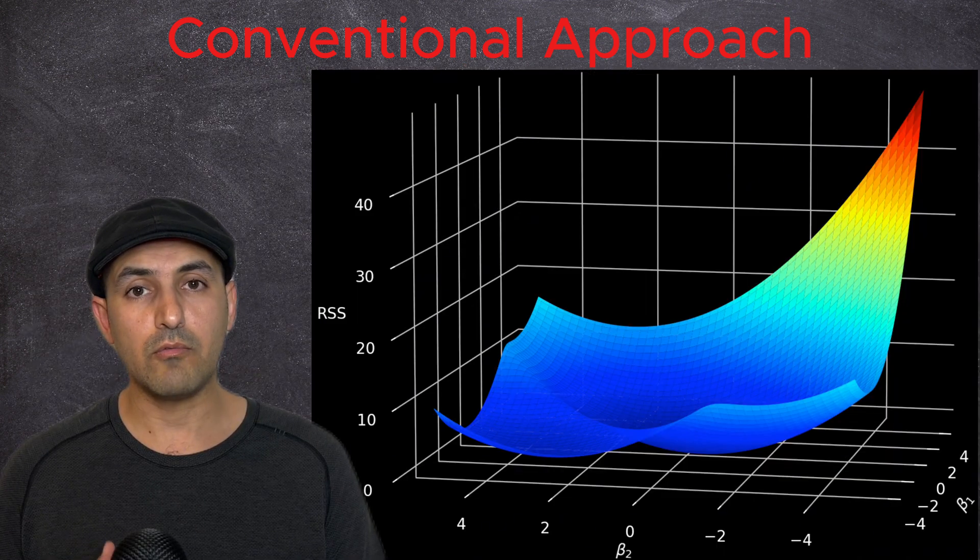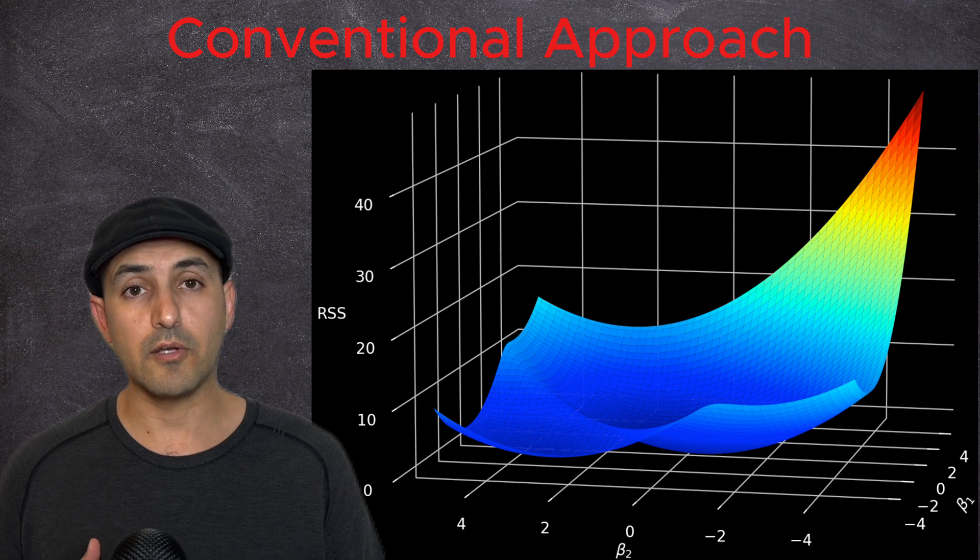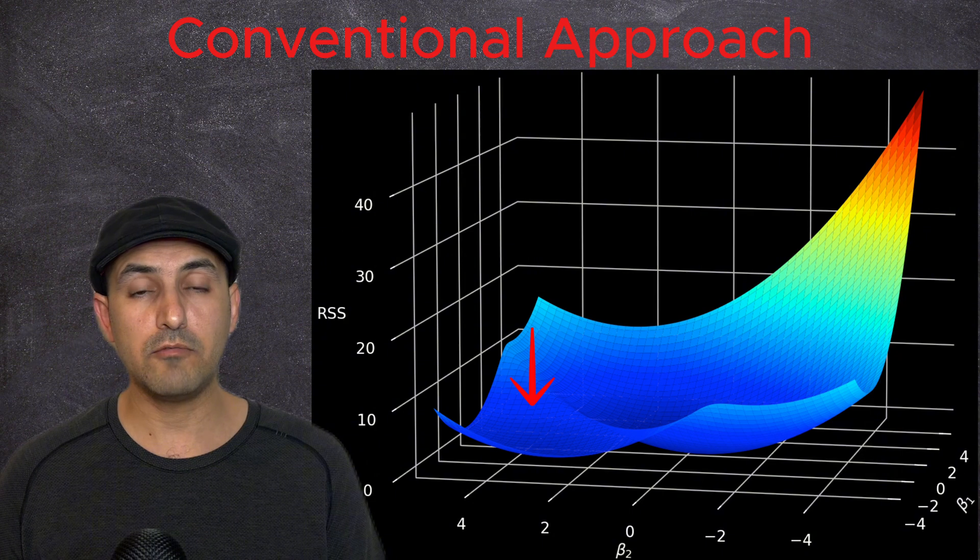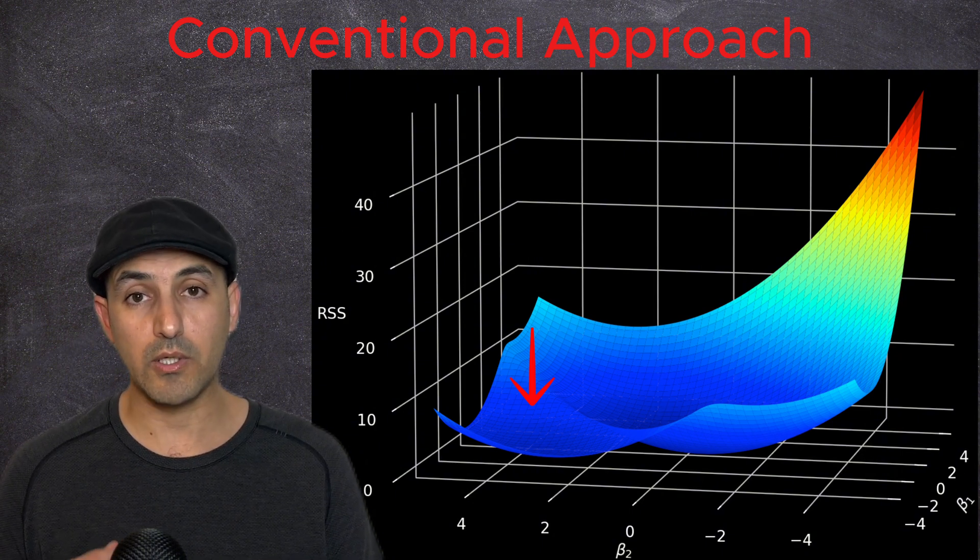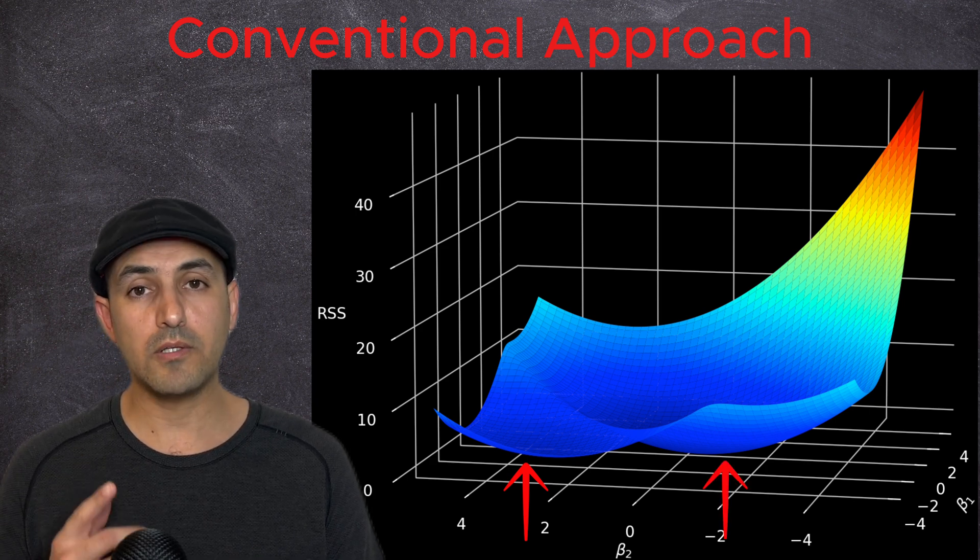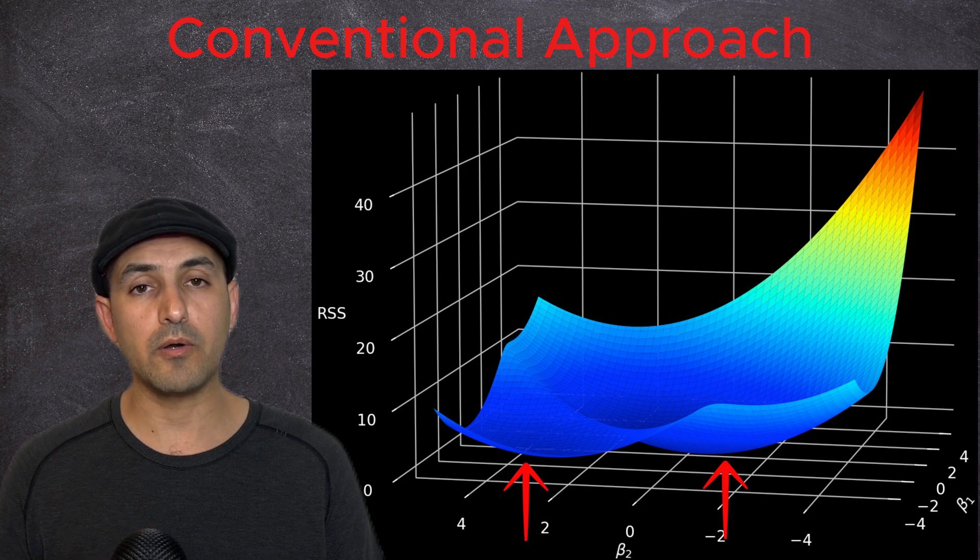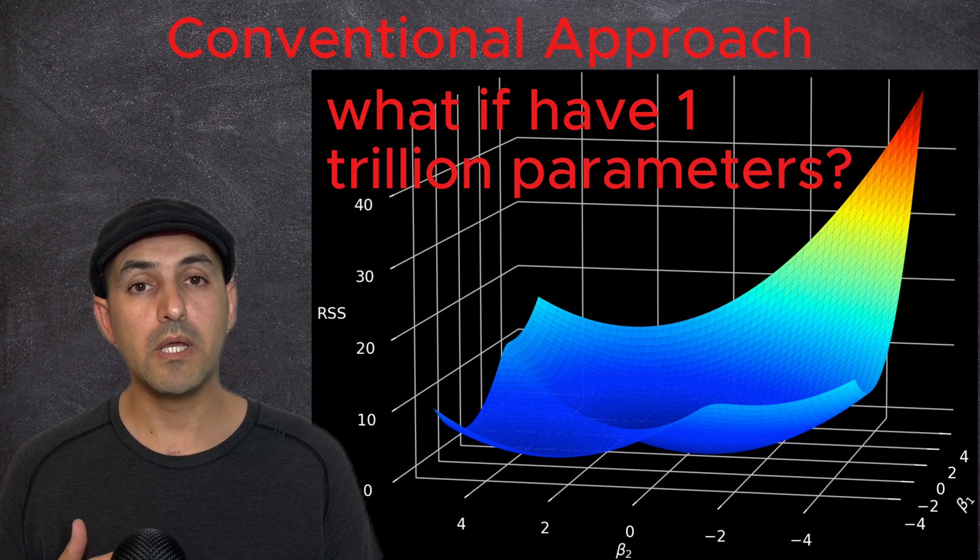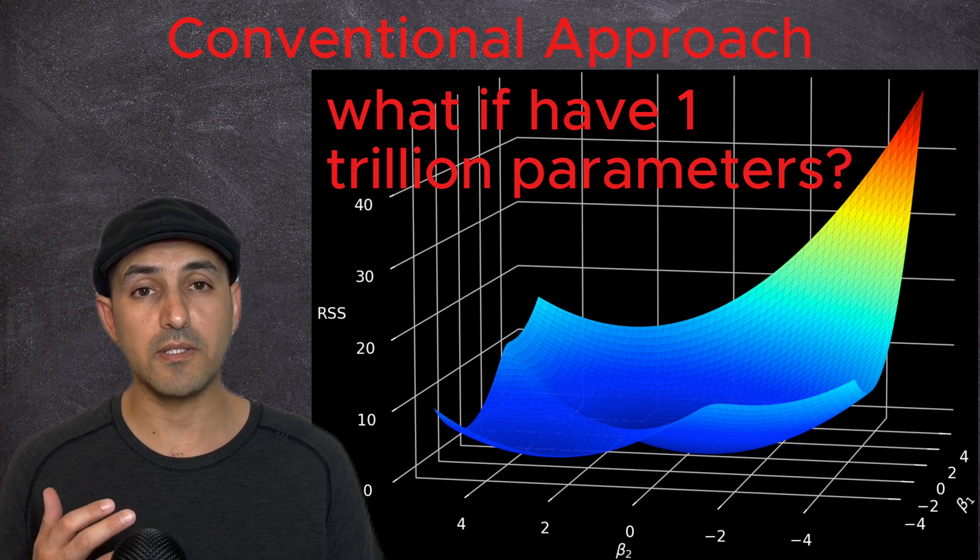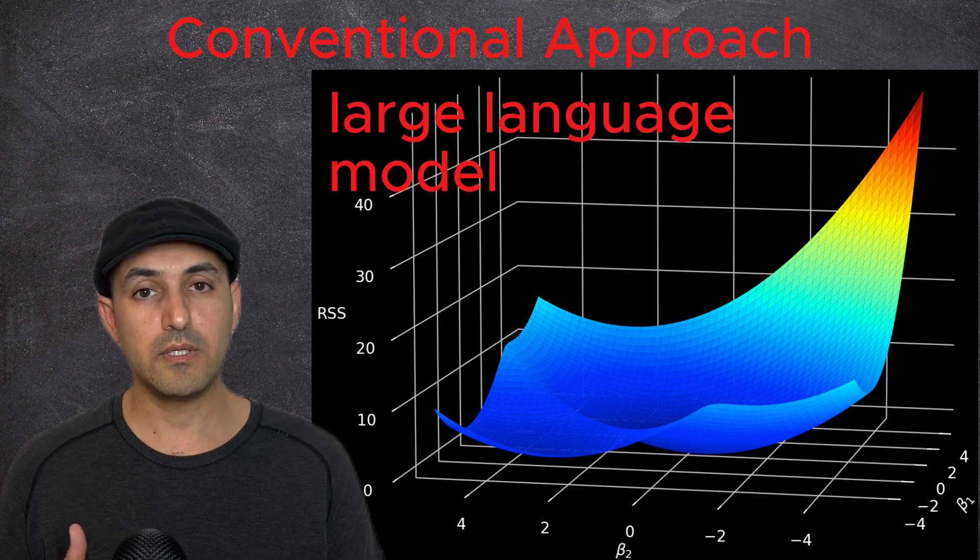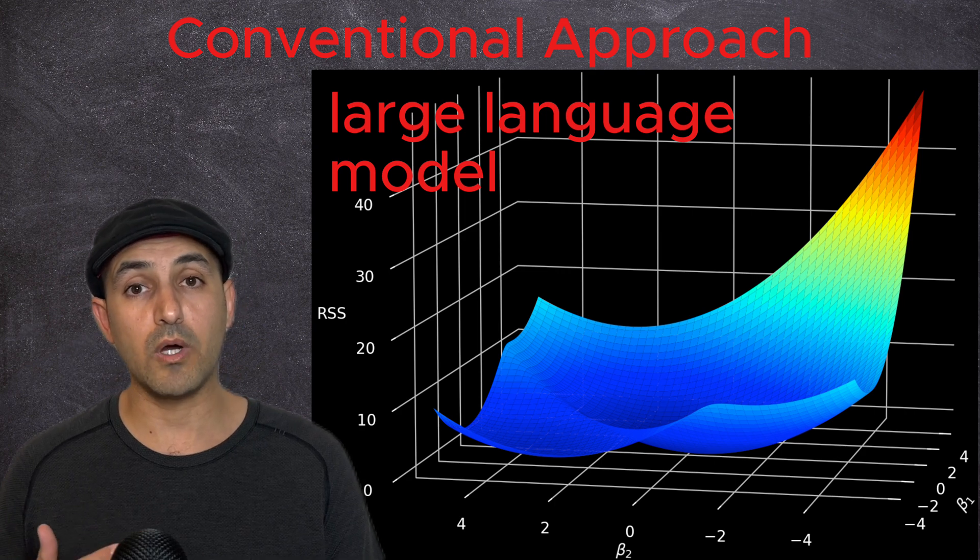Another problem is when we have a surface like this and our initial guess happens to fall here, then the algorithm will give me a wrong answer. It returns the location of a local minimum instead of the true minimum. And this visualization is just for two unknown parameters. Imagine how complicated and lengthy the process can be when a model has as many unknown parameters as a trillion, such as in GPT or Gemini large language models. That explains why OpenAI spent 100 million to train GPT-4.